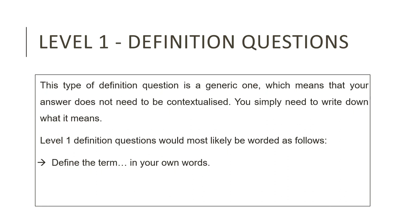Another type of question you are guaranteed to get in your NSC examination is a definition question. There are two types: one falls under Level 1 and the other under Level 2. Definitions of concepts were taught in class when your teacher taught you the content of the specific topic. Some examples of definition questions you could get are: communism, capitalism, the Cold War, sphere of influence, the Iron Curtain, satellite states, policy of containment, the Truman Doctrine, the Marshall Plan, dollar imperialism, blockade, and many more.